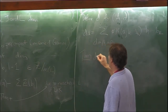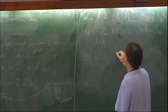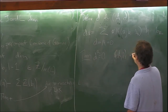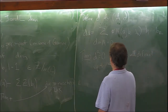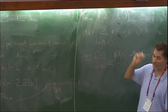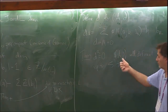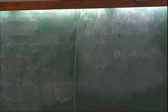It's a theorem that D-squared equals zero and the DGA is well-defined up to stable-tame isomorphism. If I change the Legendrian by an isotopy or change my almost complex structure, the algebraic invariant doesn't change.